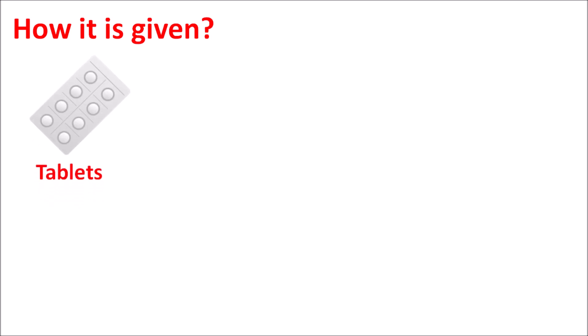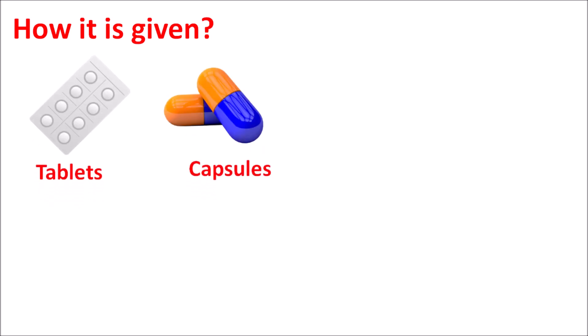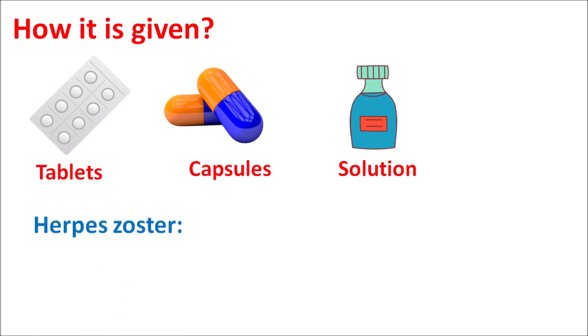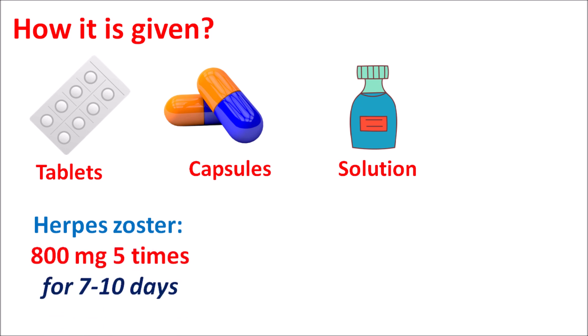This drug is available in different dosage forms — as tablets, capsules, oral solution, and it can also be given by IV infusion. The dose of the drug depends on the type of clinical indication. For the treatment of herpes zoster infections, this drug is given at a dose of 800 mg five times daily for seven to ten days, with each dose given within a four-hour gap.